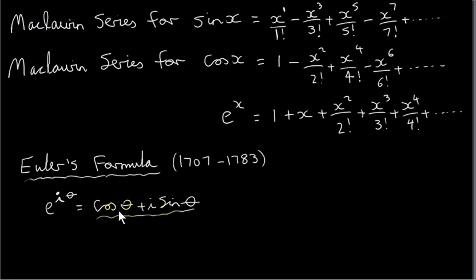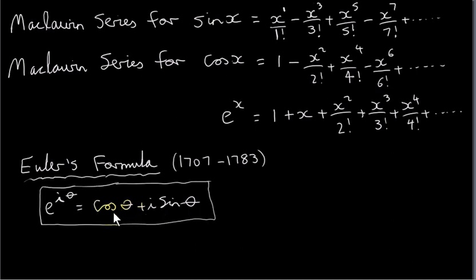The right-hand side is the polar form of a complex number whose modulus is 1, because all complex numbers have the form r times cos theta plus i sine theta. So r must be 1 in this case, and whose argument is theta. By converting complex numbers to Euler's form — replacing cos theta plus i sine theta with e to the power of i theta — it's very easy to prove things like De Moivre's theorem and many trigonometric identities, much easier than in previous videos.